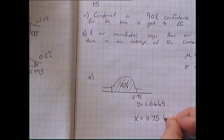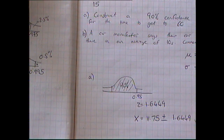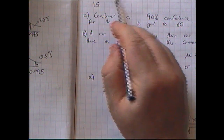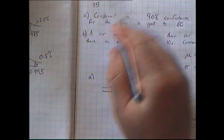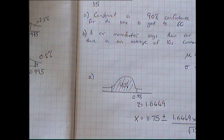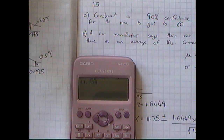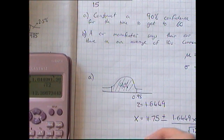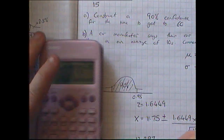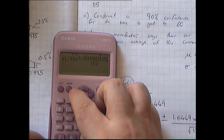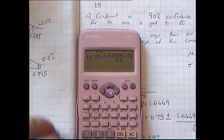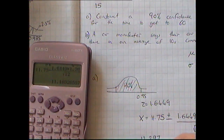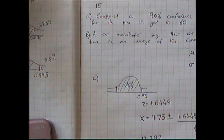That z value of 1.6449 is normally the first mark on this type of question. I then use my formula: x equals my mean 11.75 plus or minus 1.6449 times 1.362 (sigma), all divided by the square root of n. I have 12 cars in my sample so I divide by the square root of 12. Entering this gives me an upper value of 12.397.